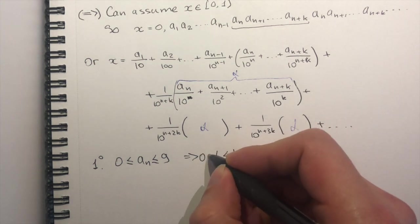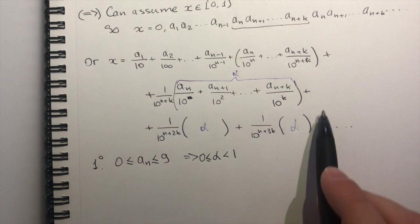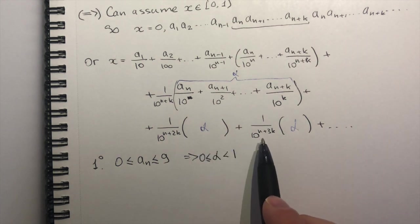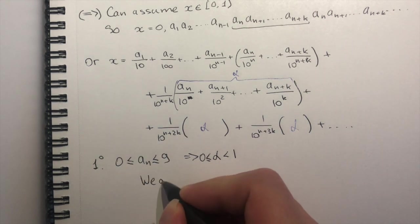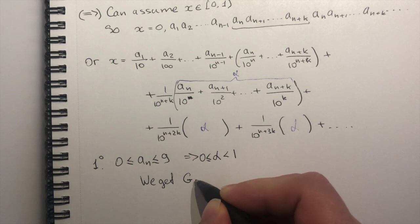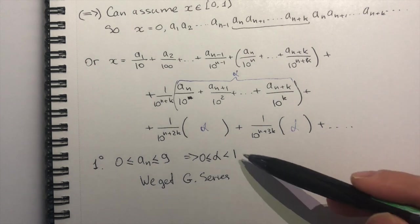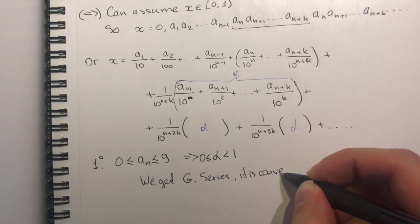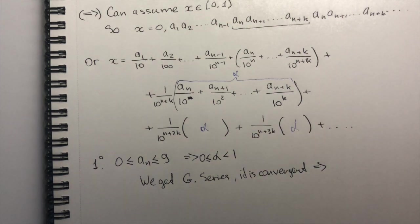Well, using this information, you can easily show that alpha is less than one. It's also greater than or equal to zero, right? But what does that mean? That means that we have a geometric series happening here, where alpha remains constant, but every time we multiply it by 1 over 10 to the k. So we get a geometric series. But since alpha is less than one, it is convergent, and you can show that it converges to a rational number.